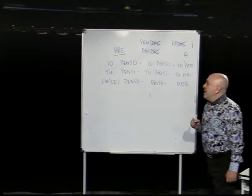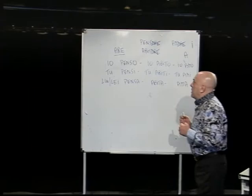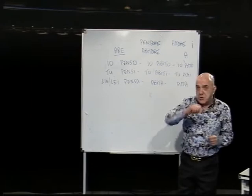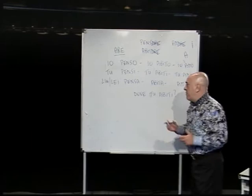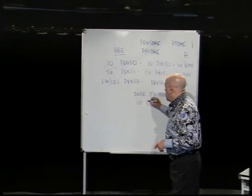For example, if I want to ask you 'Where do you live?', I will say: dove tu abiti? The verb I am using is abitare (to live). Remove -ARE and add E because the subject is tu. When you answer, you will use io abito.